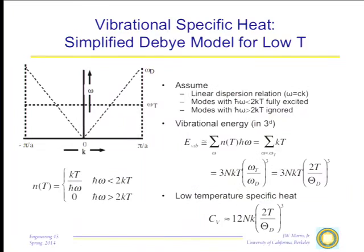The total number of modes is fixed to be 3N. For the simple model, we assume: if ħω < 2kT, we are in high-temperature behavior and those modes are fully activated with n(T) = kT/ħω. When ħω > 2kT, none of those modes are activated. So we have a cutoff at ω_T = 2kT/ħ. Everything below that cutoff is in the high-temperature limit; everything above is not activated. This is not a bad approximation to the true situation.